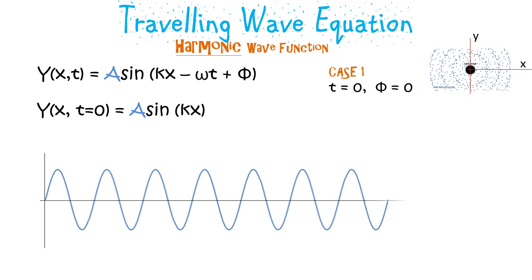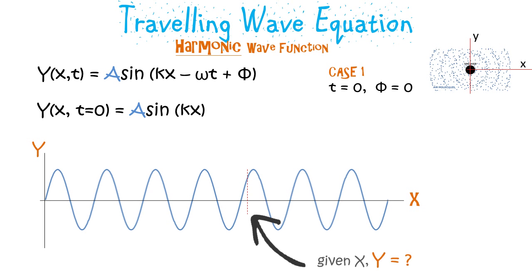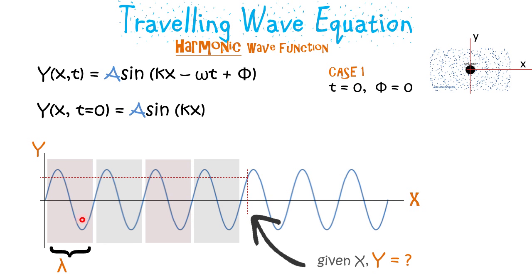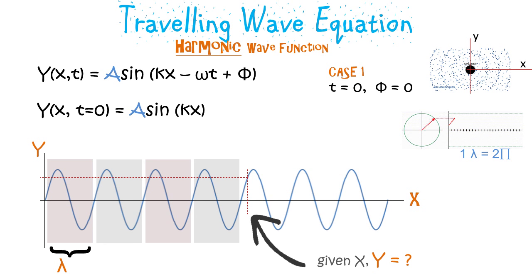We will now try to make sense of this traveling wave equation. As a first case we take t equal to zero and psi equal to zero. This graph represents that particular equation and we may be asked to find the value of y at a given x. We know that one wavelength corresponds to two pi radians, so k is denoted as 2π divided by lambda and is also known as the wave number.